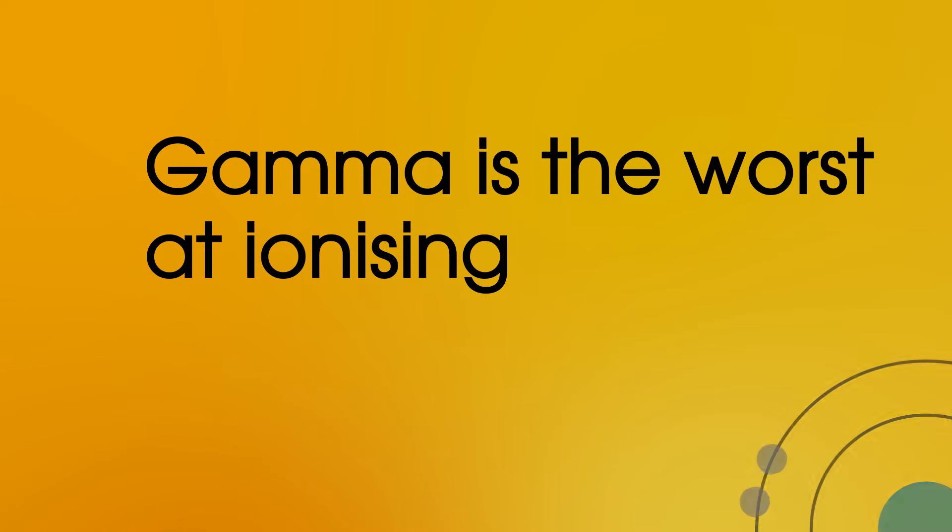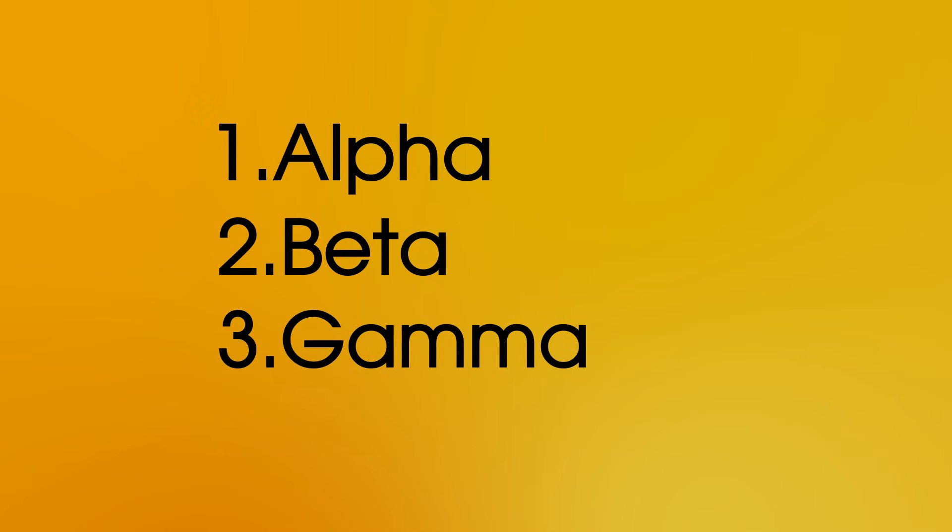And finally, we have gamma. And this is the worst at ionising because it needs to directly hit an outer electron in an atom to cause ionisation. It's very important you learn how good alpha, beta and gamma are at causing ionisation as it's very important in the rest of the radioactivity topic.